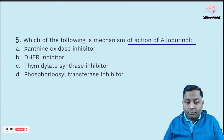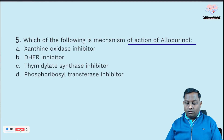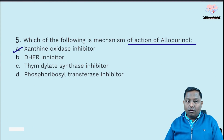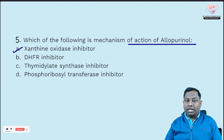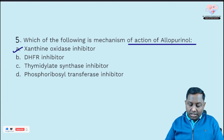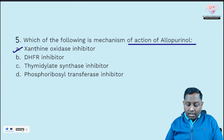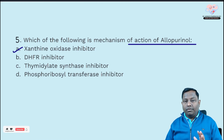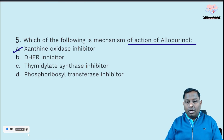The fifth question: what is the mechanism of action of allopurinol? From the previous question, we already know — allopurinol is a xanthine oxidase inhibitor. It is not a dihydrofolate reductase inhibitor (that's methotrexate), not a thymidylate synthase inhibitor, and not a phospholipid transfer inhibitor.